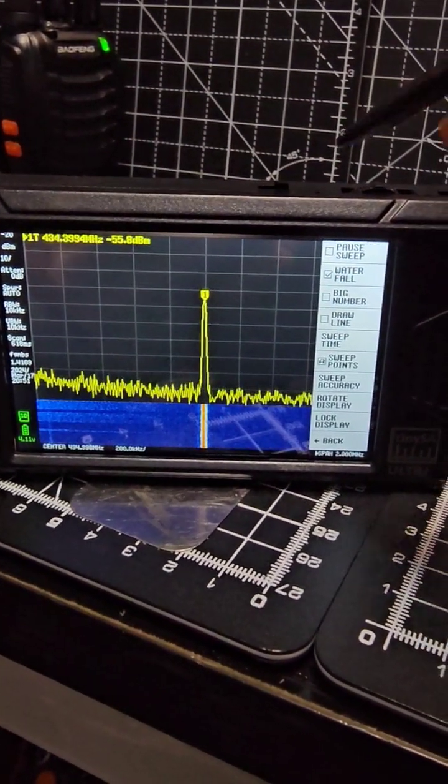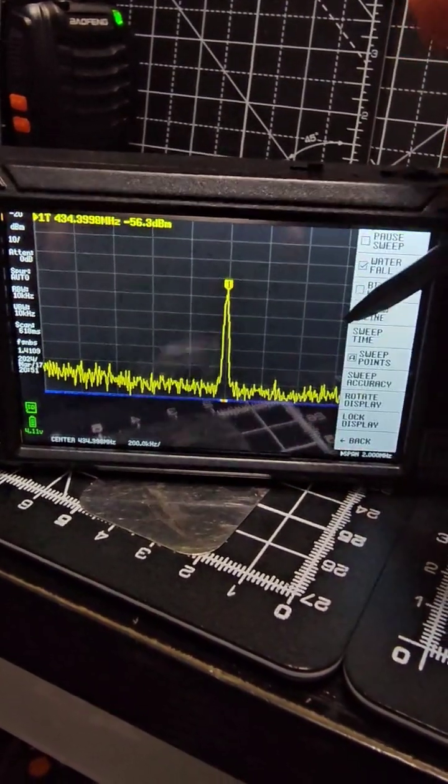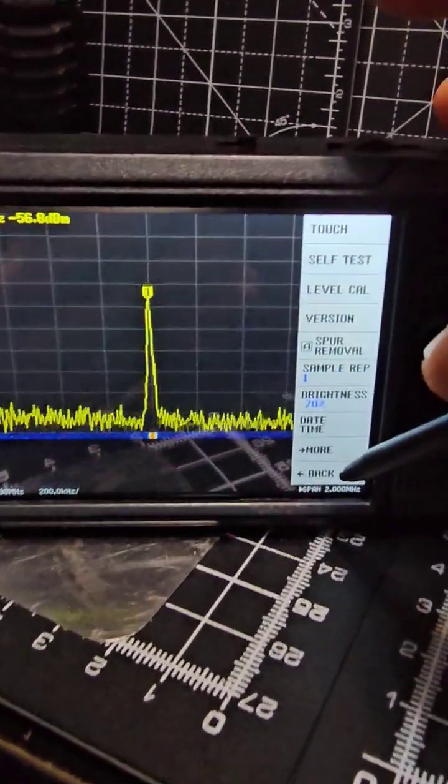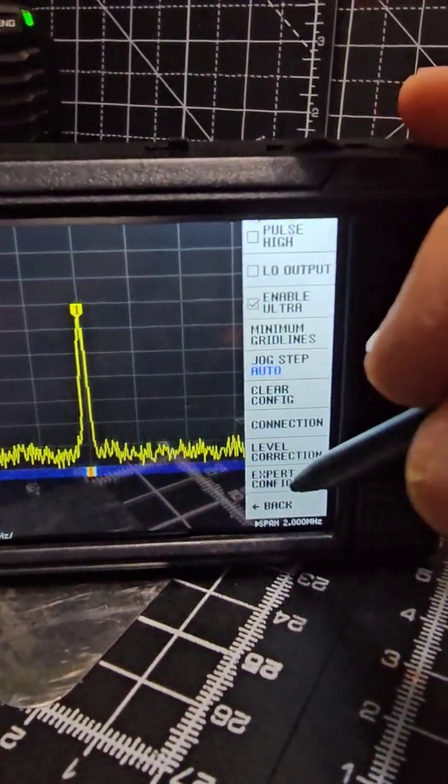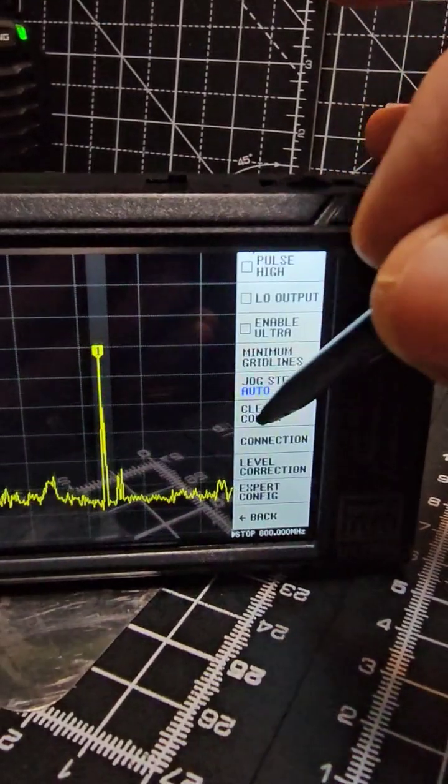To measure Wi-Fi, go into ultra mode on your tiny SA Ultra. So all you do is tap the screen, go back until you see config, then go to more, and in this enable ultra.